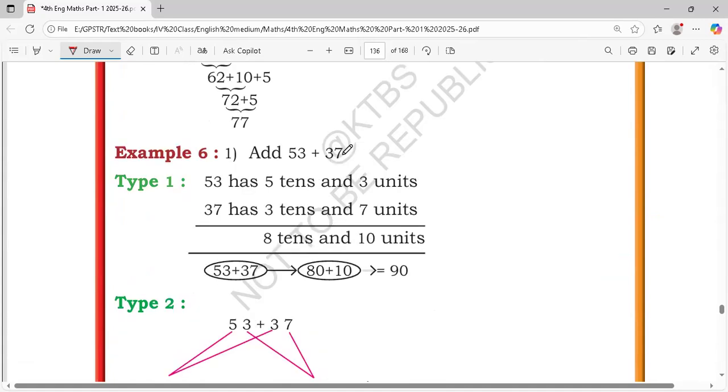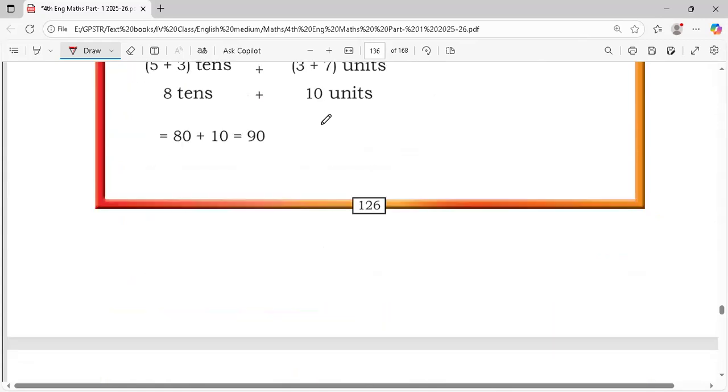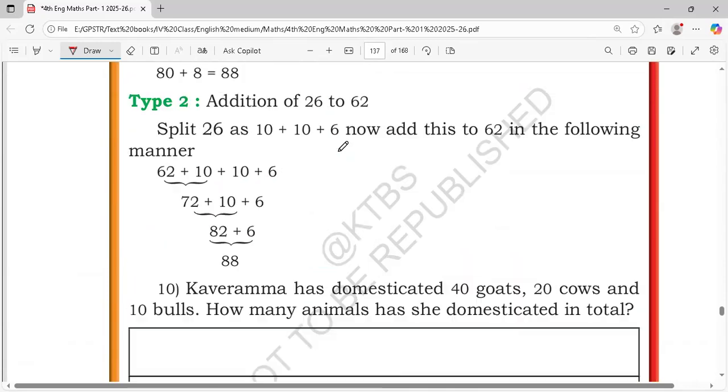Next, 53 plus 37. First add 50 plus 30, that means 80. 3 plus 7 means 10. 80 plus 10, this is 90. This is easy.